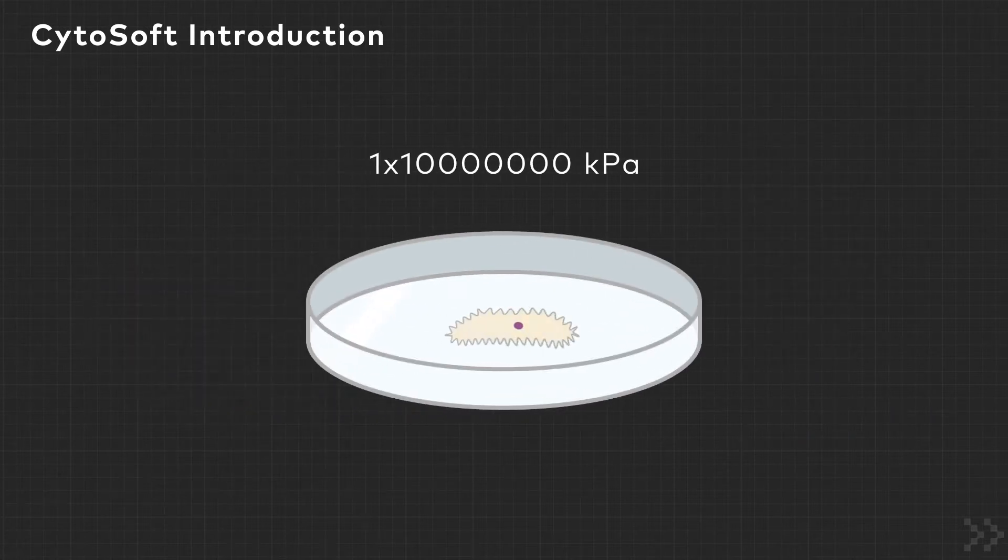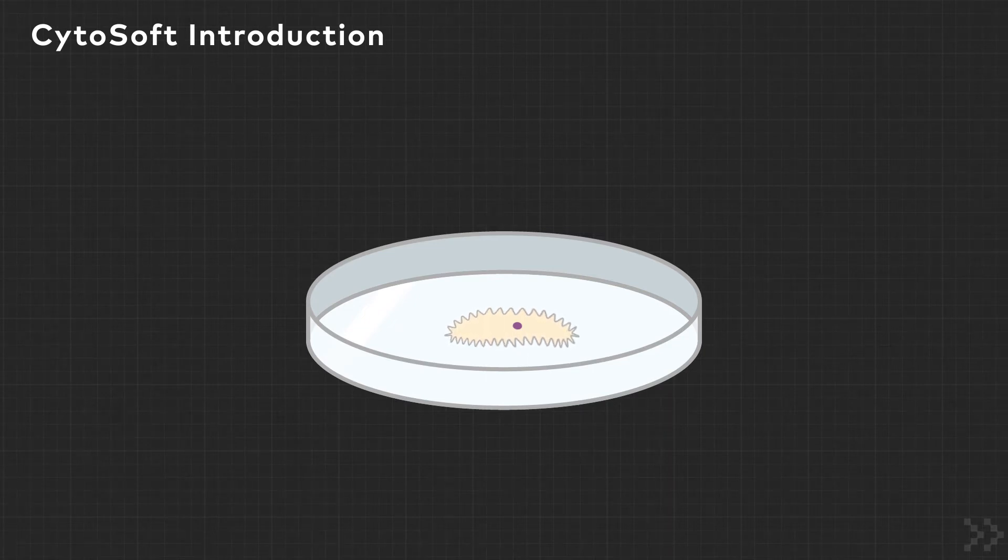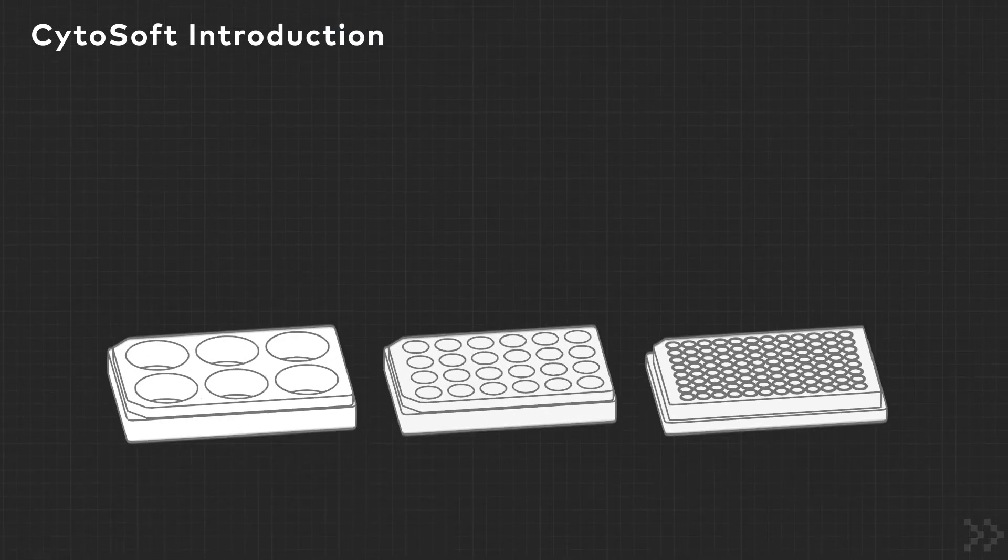This causes cells to behave differently from how they might normally behave in vivo. To allow researchers to grow cells on a physiologically relevant substrate, we created Cytosoft.